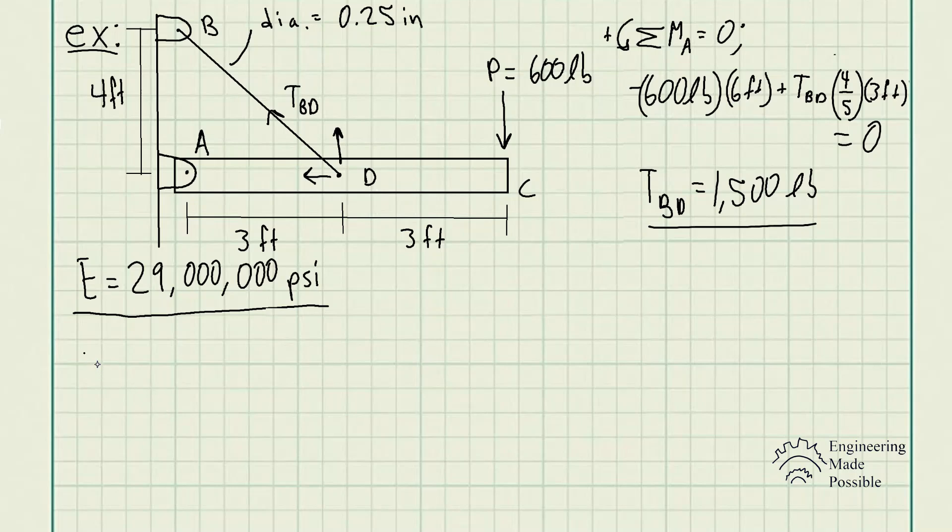Now going back to the deformation equation, the deformation of the cable BD is equal to that external load P times the length divided by modulus of elasticity times its cross-sectional area. In this case, P is actually the tension in that cable BD, so it's TBD. We know the length of it because we have the geometry, the width is 3 feet, the height is 4 feet, and we're able to use trig to solve for that hypotenuse, which is the length of the cable.